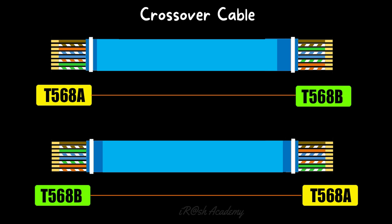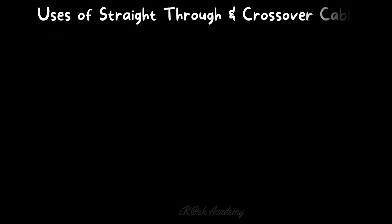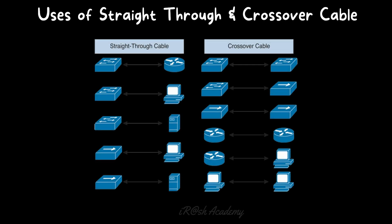Straight-through cables are used to connect dissimilar devices. For example, connecting a switch to a router, a PC to a switch, a server to a switch, a PC to a hub, or a server to a hub. On the other hand, crossover cables are used to connect similar devices. For example, switch to switch, hub to hub, router to router, or PC to PC directly — all require crossover cables.